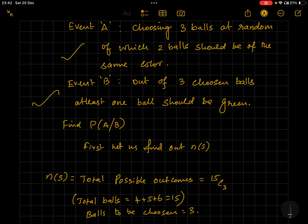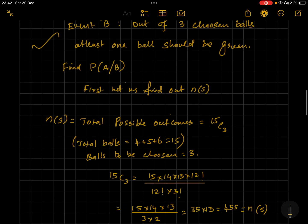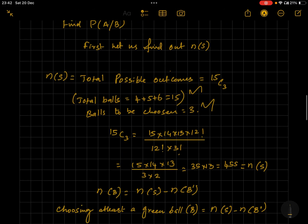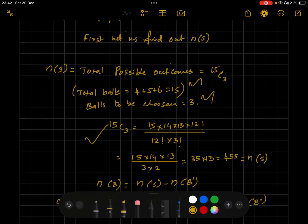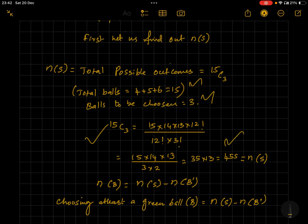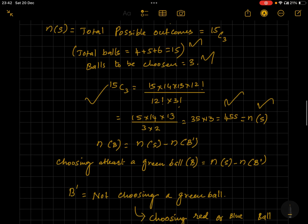Let's define event A: choosing three balls at random of which two balls should be of the same color. Event B: out of three chosen balls, at least one ball should be green. Find conditional probability of A given B has occurred. First, let's find out n(S). What is the total balls available? 15 balls. How many balls should be chosen? Three.